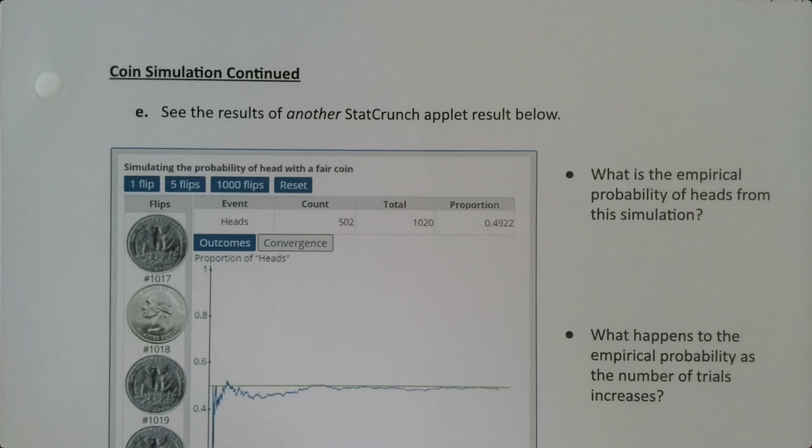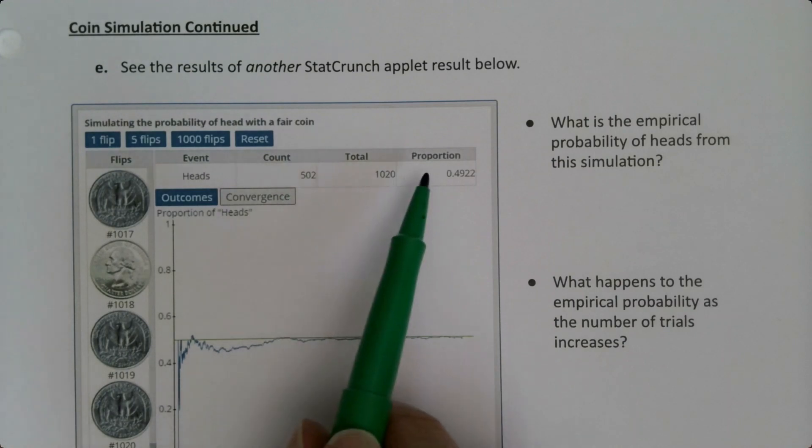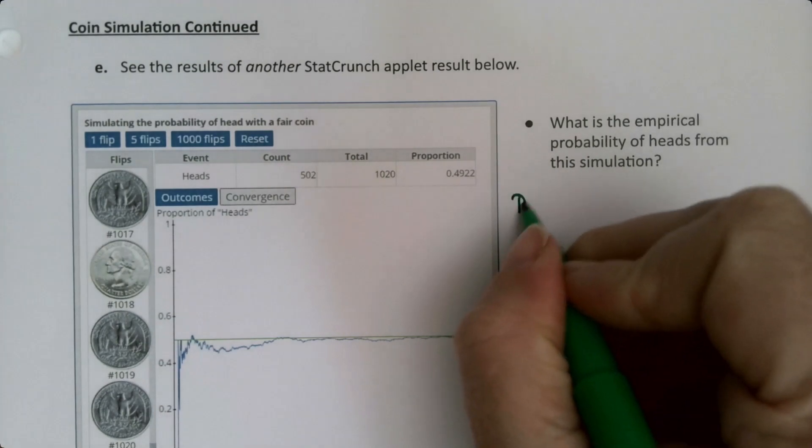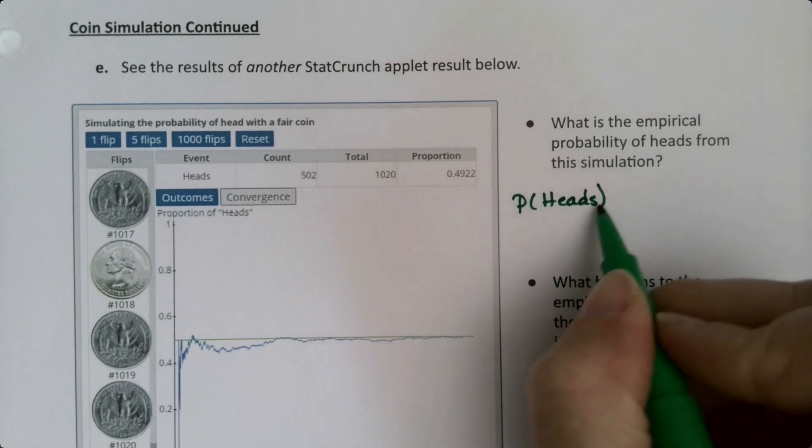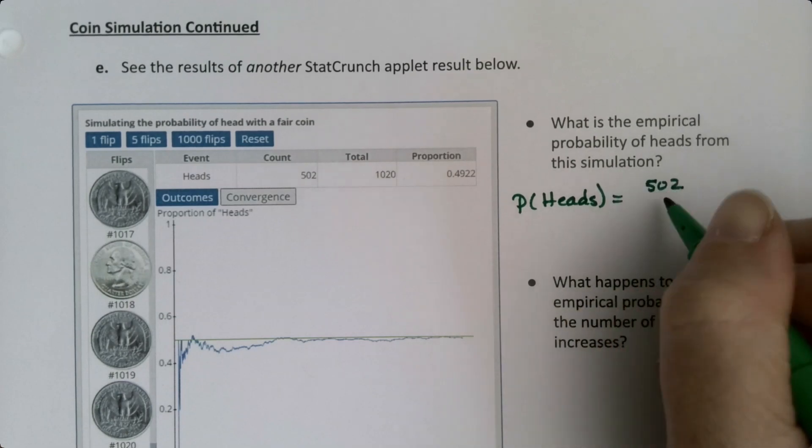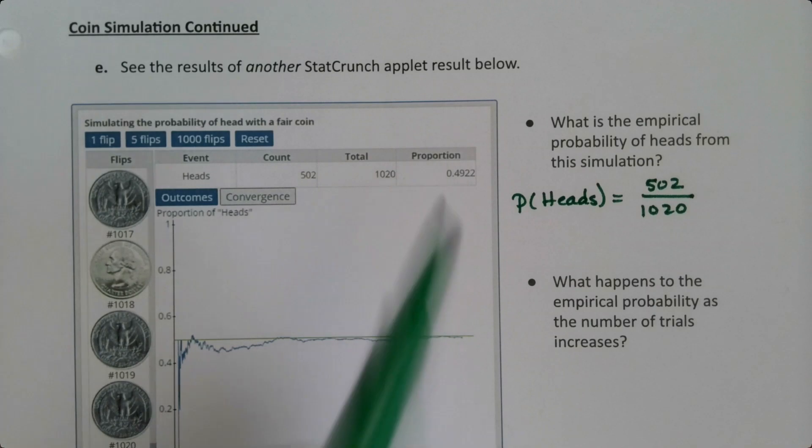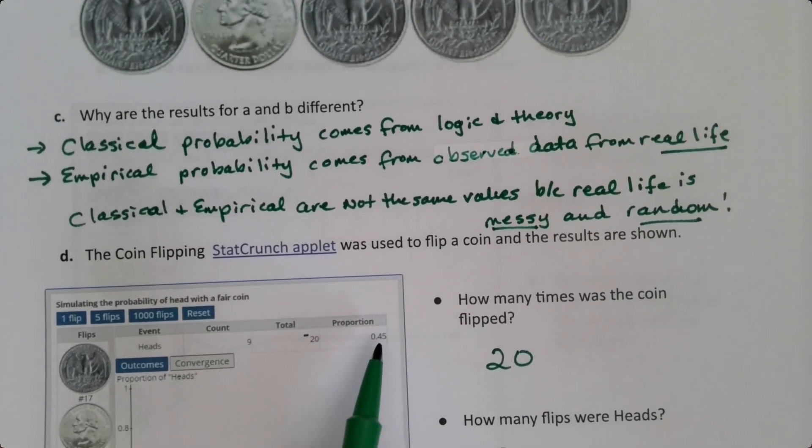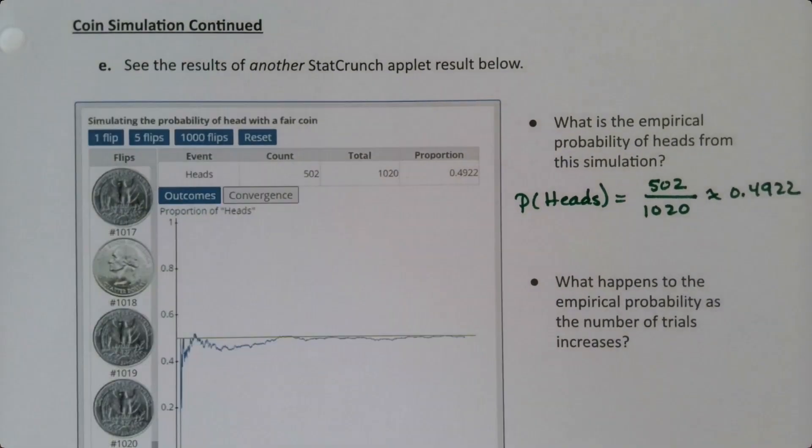Then I did it again. And I had the applet run it and run it and run it. And let's see what happened now. I have 502 heads out of 1,020. So the probability of heads, P stands for probability, the parentheses stands for the of, is 502 divided by 1020, which we can see is 0.4922. Oh, I didn't even look. It was right there that time too. I didn't have to go to Desmos. I missed it that it was there. So this is 0.4922.